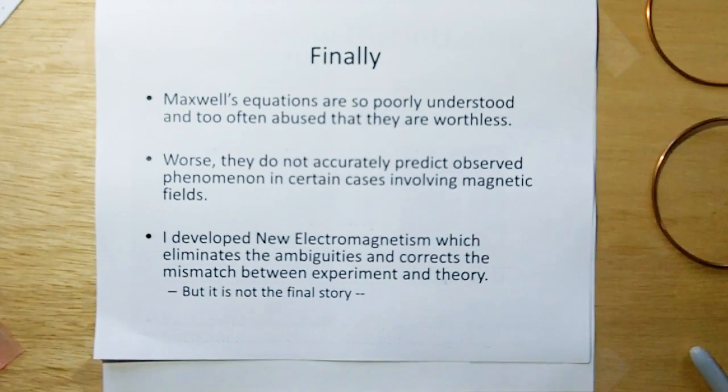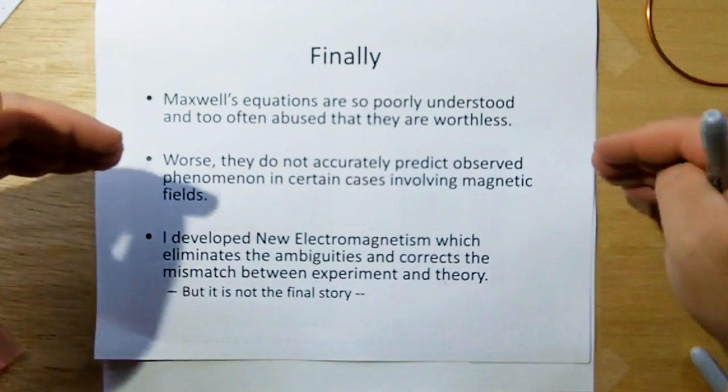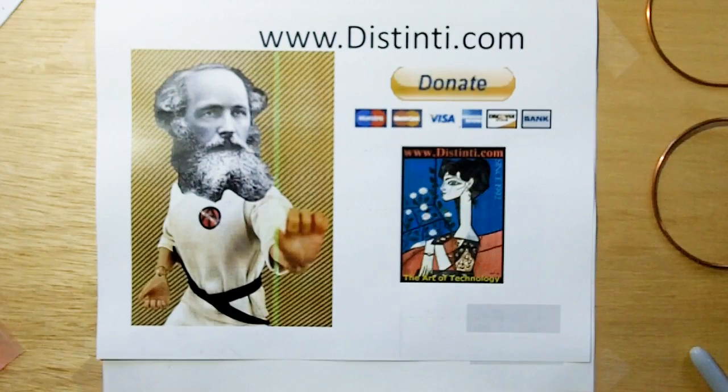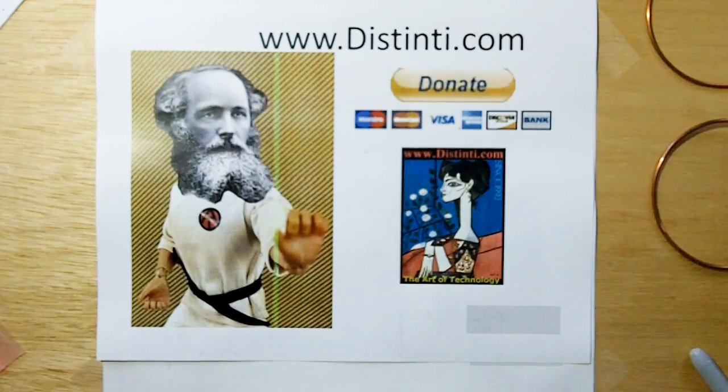Finally, just a note, Maxwell's equations are so poorly understood, even by experts, and too often abused that they are actually worthless. Worse, they do not accurately predict observed phenomenon in certain cases involving magnetic field. And I've developed neural magnetism many years ago in order to eliminate the ambiguity and correct the mismatch between experiment and theory. But it's not the final story, because as you keep going deeper down the rabbit hole, I'm finding more and more stuff that's wrong. Thank you, and all you engineers will be turning in your James Clerk Maxwell with the Kung Fu right-hand rule grip. So market prices of these are going to be going down.